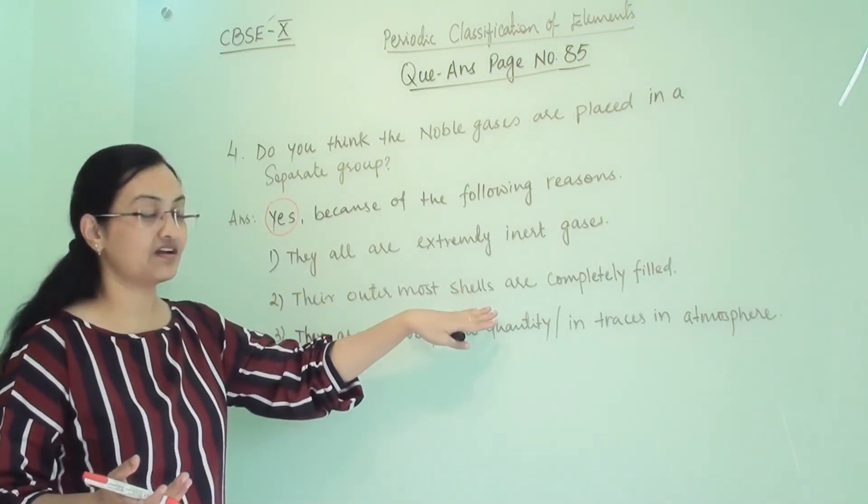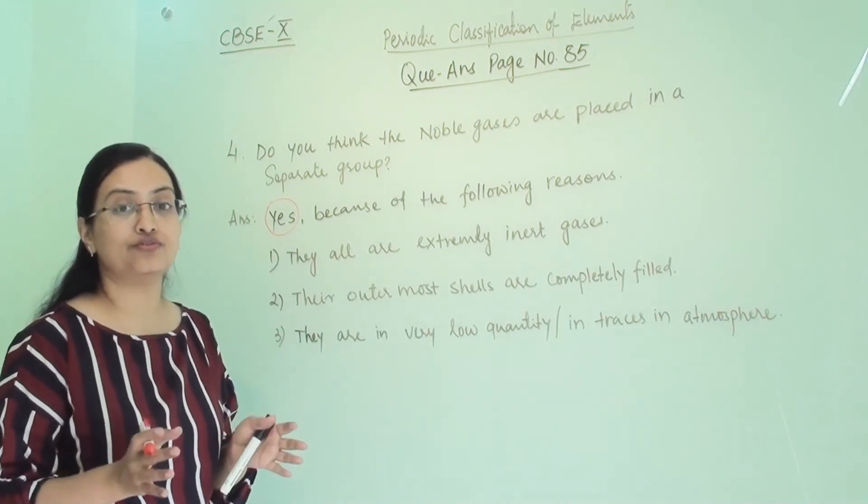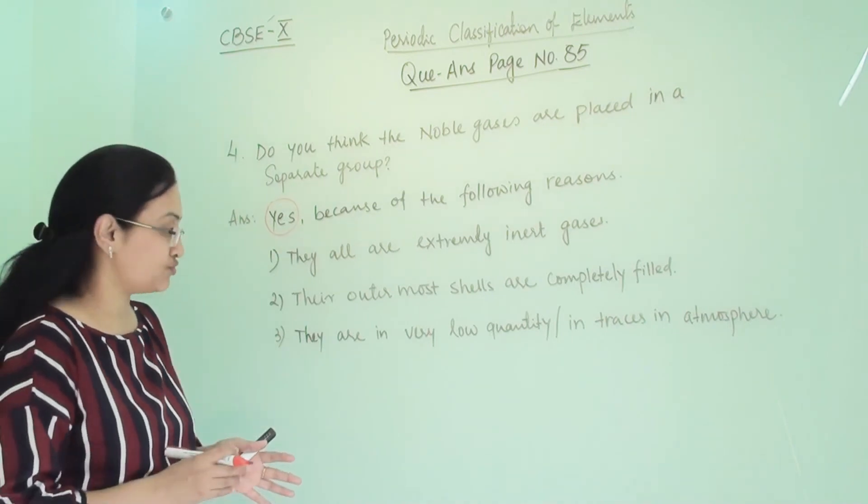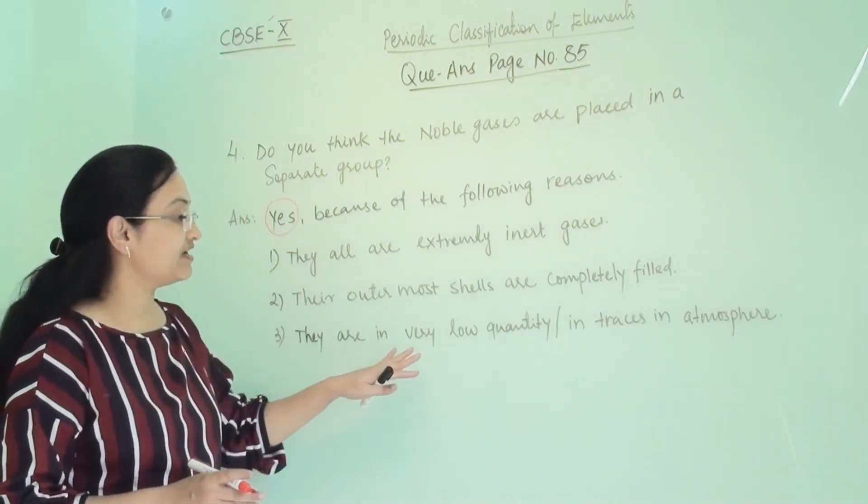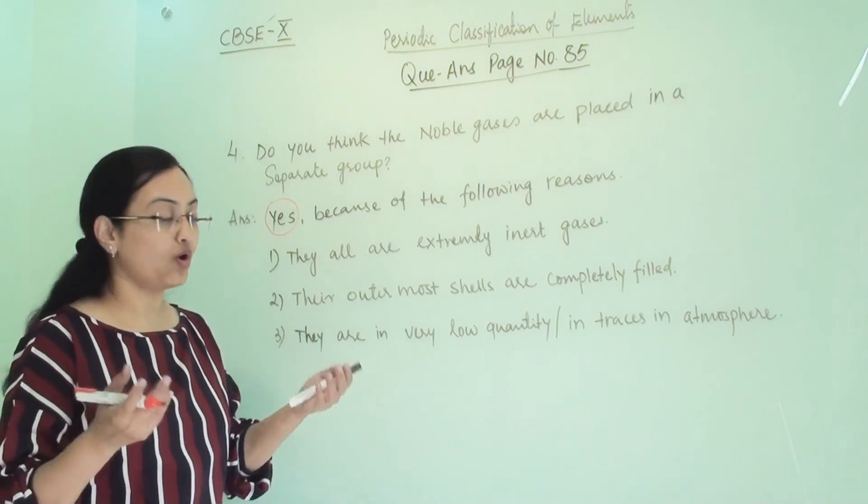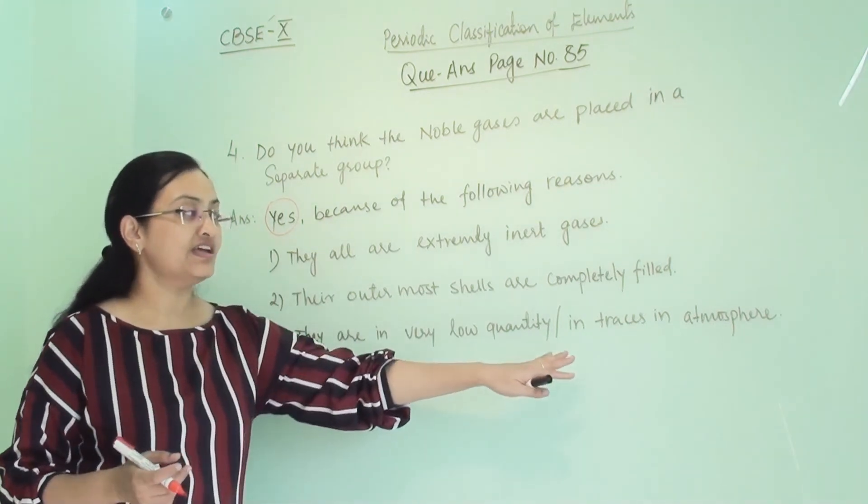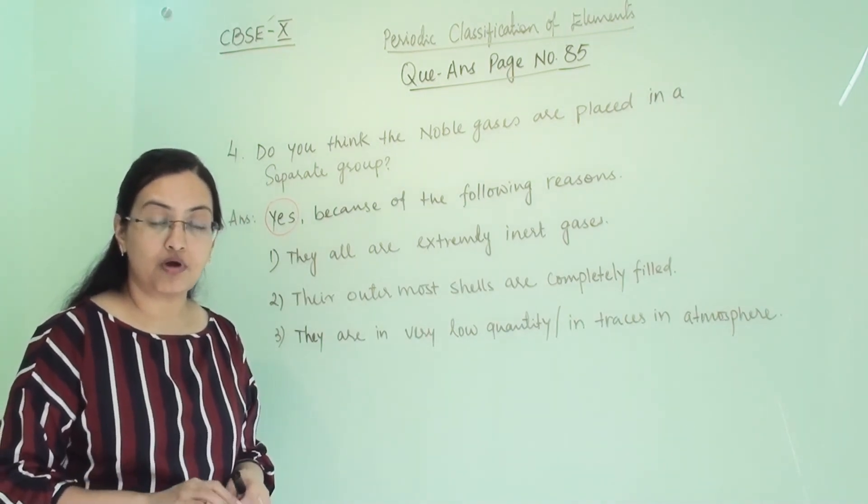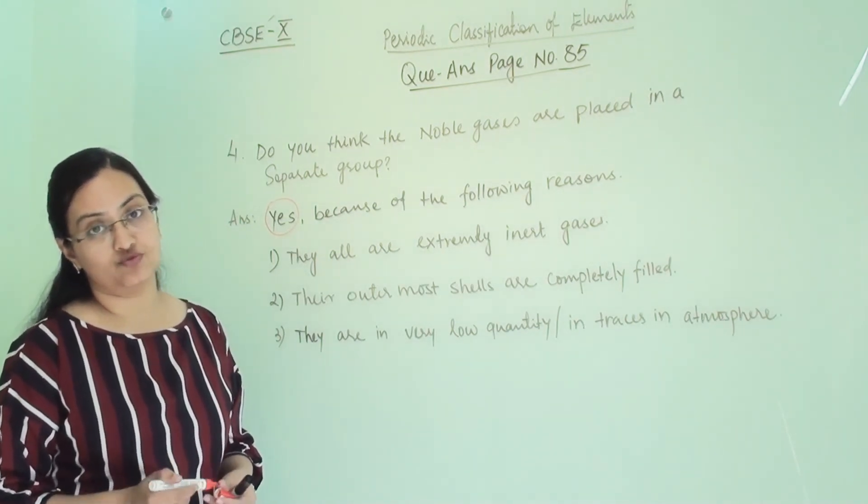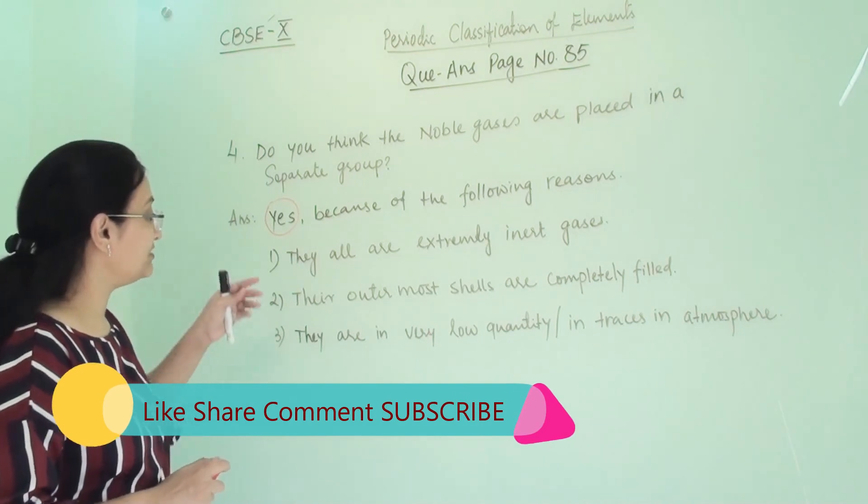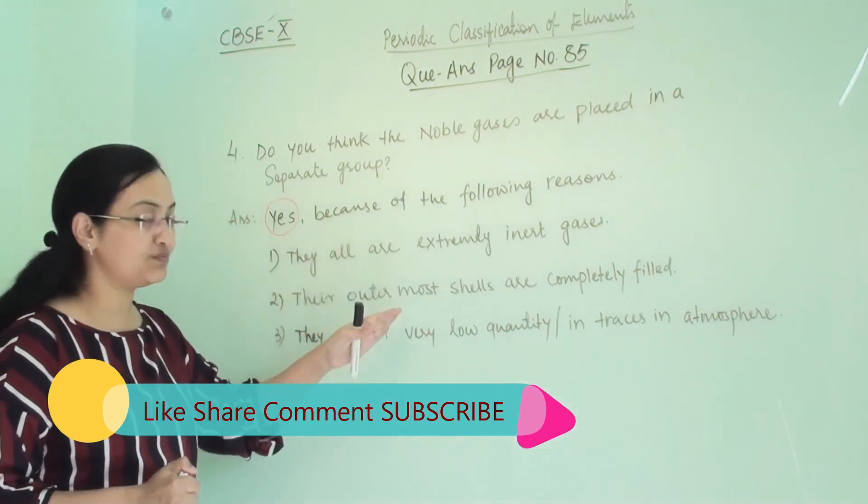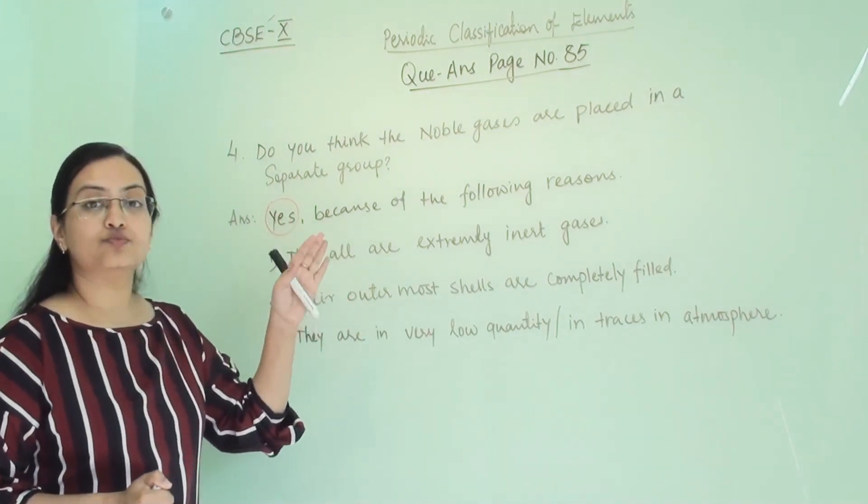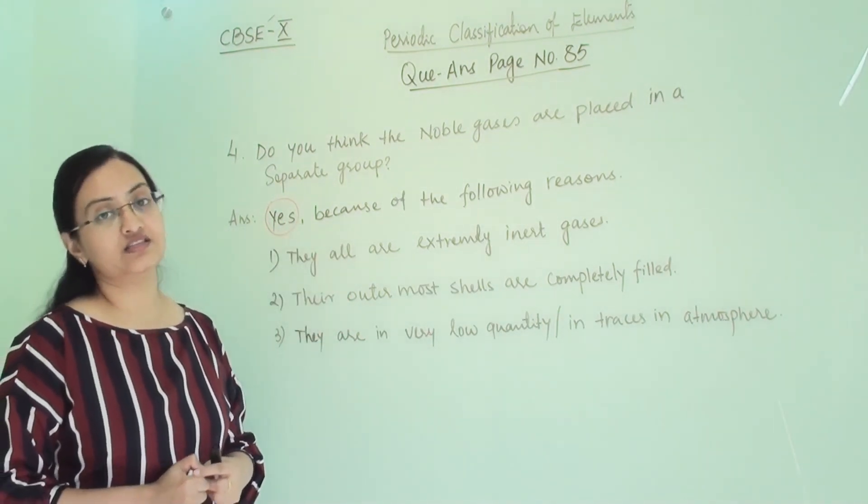Because their outermost shells are completely filled, or each of the noble gases have complete eight electrons in their outermost shell, and they are in very low quantity in atmosphere, or we can write that they are in traces in the atmosphere. We do not have their large amount or portion in our atmosphere. So due to all these properties, and they all have similar kinds of properties, that's why they should be placed separately in a separate group.